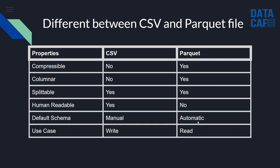Continuing the comparison: schema is defined manually in CSV, but automatically in Parquet. For use cases, CSV is more commonly used for data writing where write performance is critical, while Parquet is mostly used for reading and data retrieval. In data lake and Delta Lake concepts, we use Parquet files to efficiently read existing data from storage.